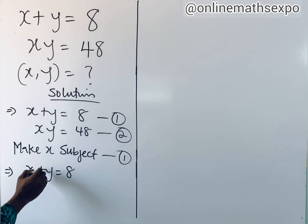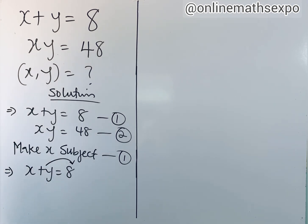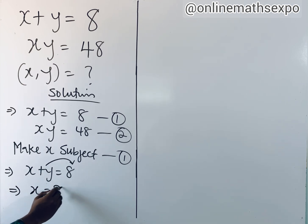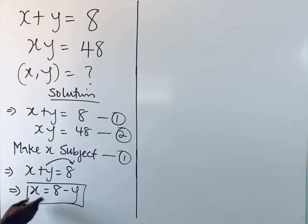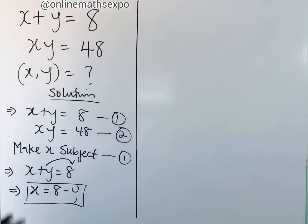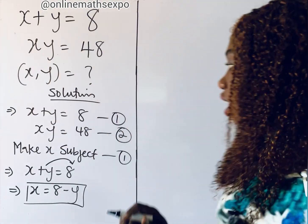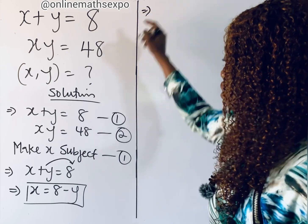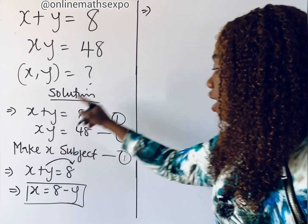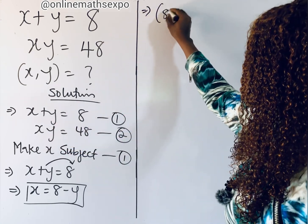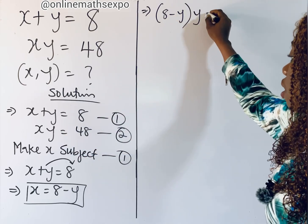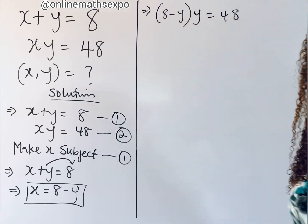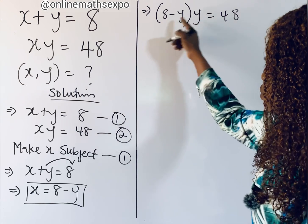From equation one, x plus y is equal to 8. We subtract y from both sides, so x gives us 8 minus y. We are going to put this value of x into the second equation. So this gives us x = 8 minus y, and our y, so we have (8 minus y) times y is equal to 48.